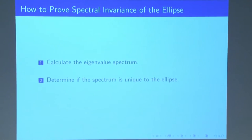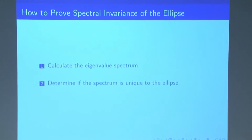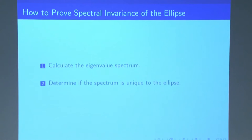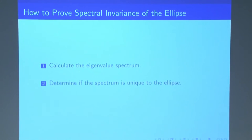So how exactly do we get there? So all it takes is really two easy steps. The first step is we need to actually calculate what the eigenvalue spectrum is in the case of an ellipse. And then our second step is to determine if that spectrum is actually unique to the ellipse.